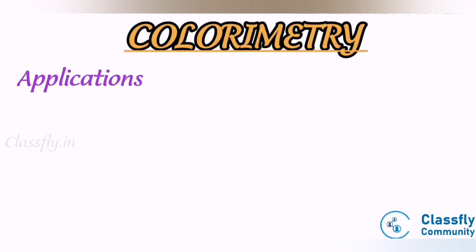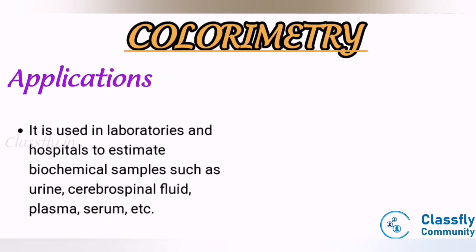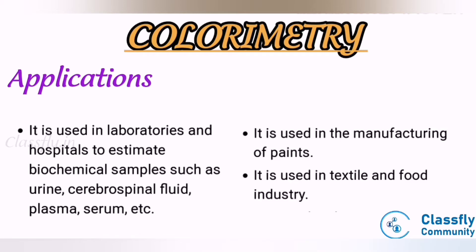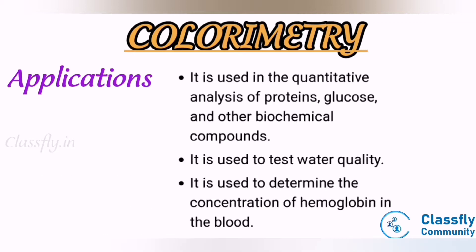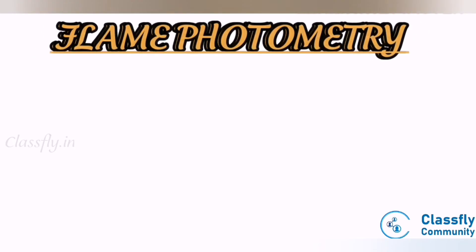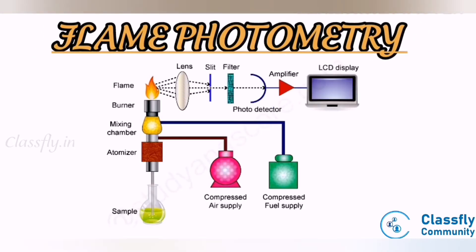Applications of colorimetry: it is used in laboratories and hospitals to estimate biochemical samples such as urine, CSF, plasma, and serum. It is used in manufacturing of paints, in the textile and food industry, for quantitative analysis of protein, glucose and other biochemical compounds, to test water quality, and to determine the concentration of hemoglobin in the blood.